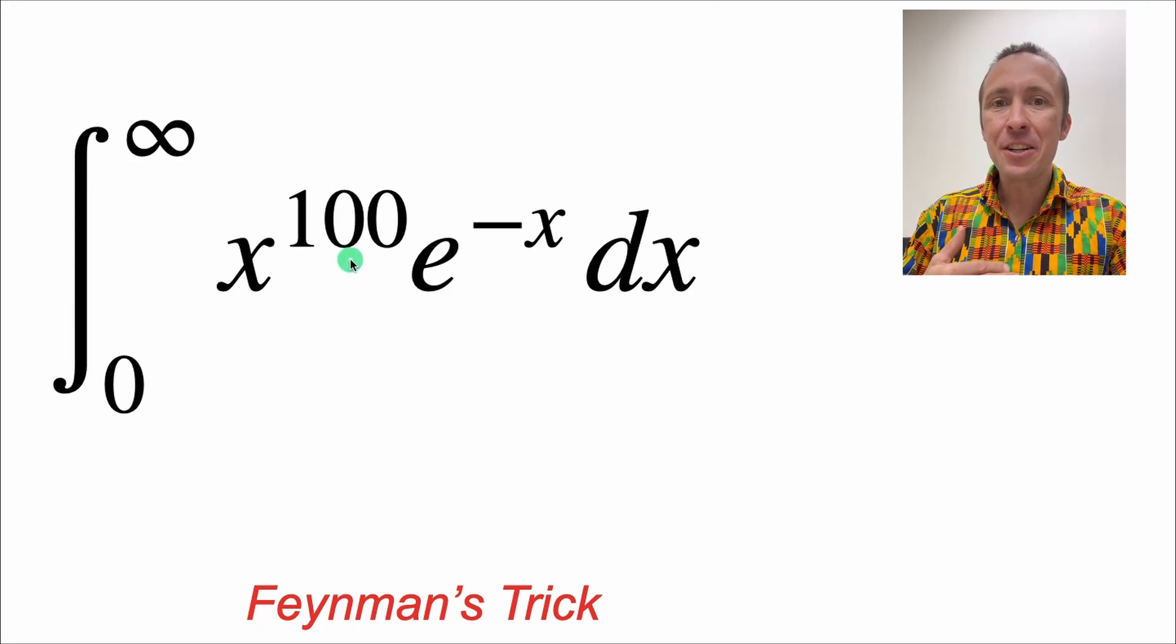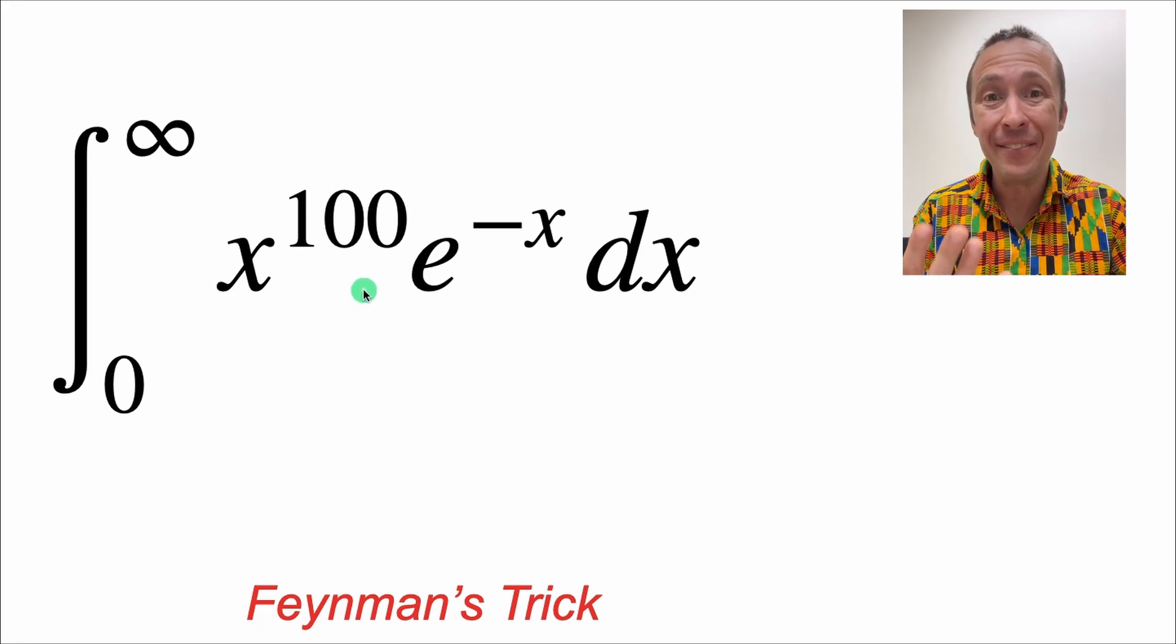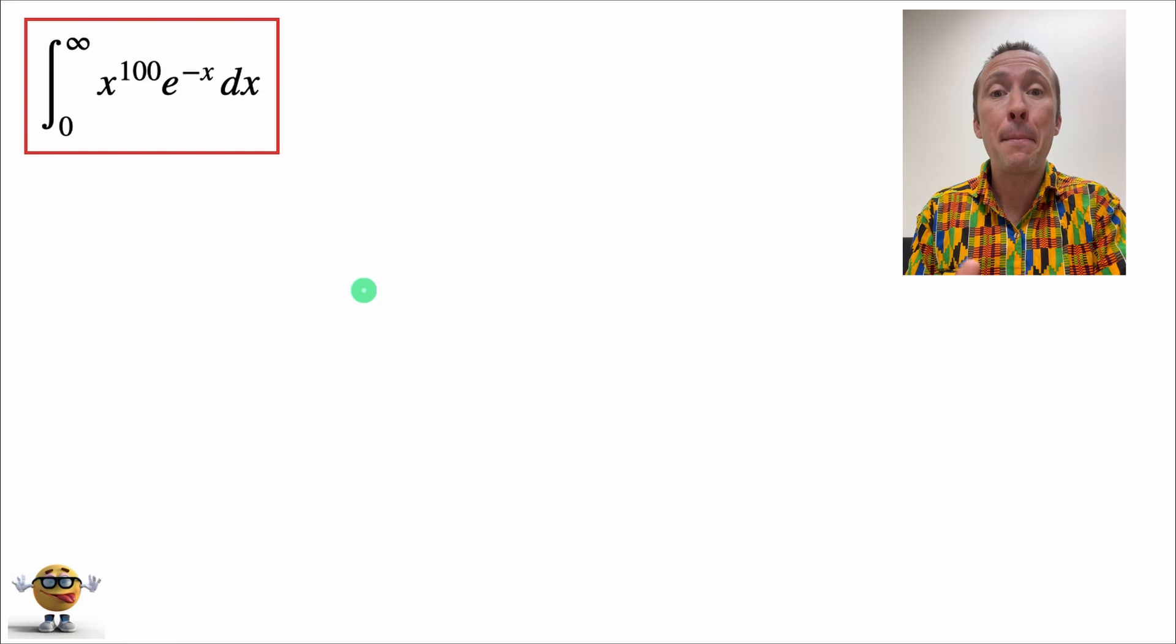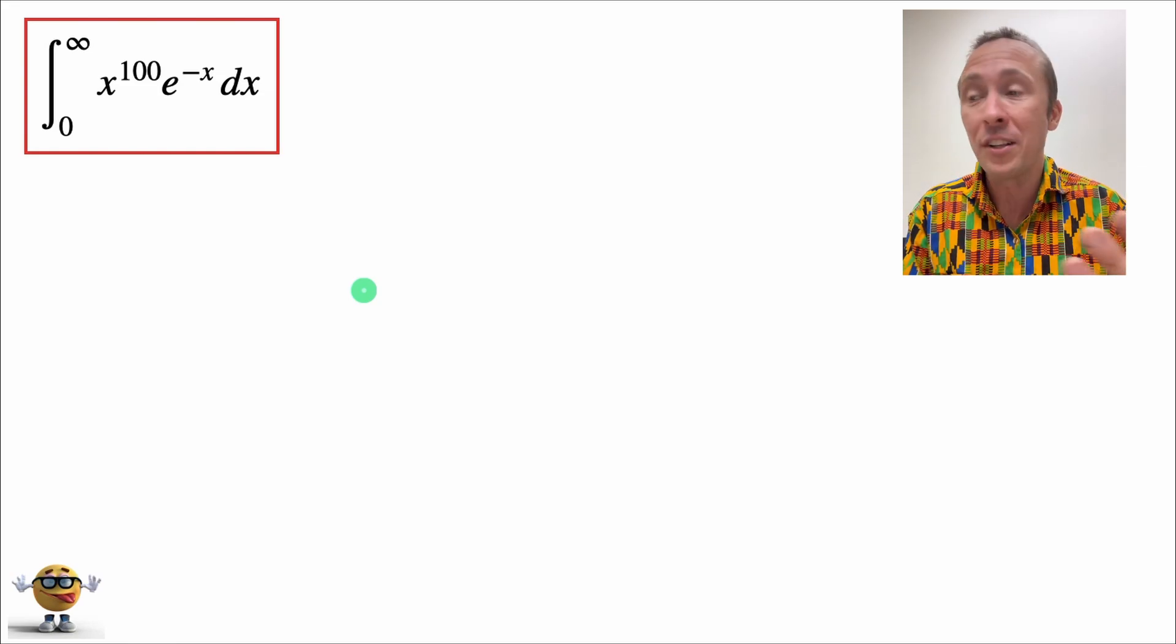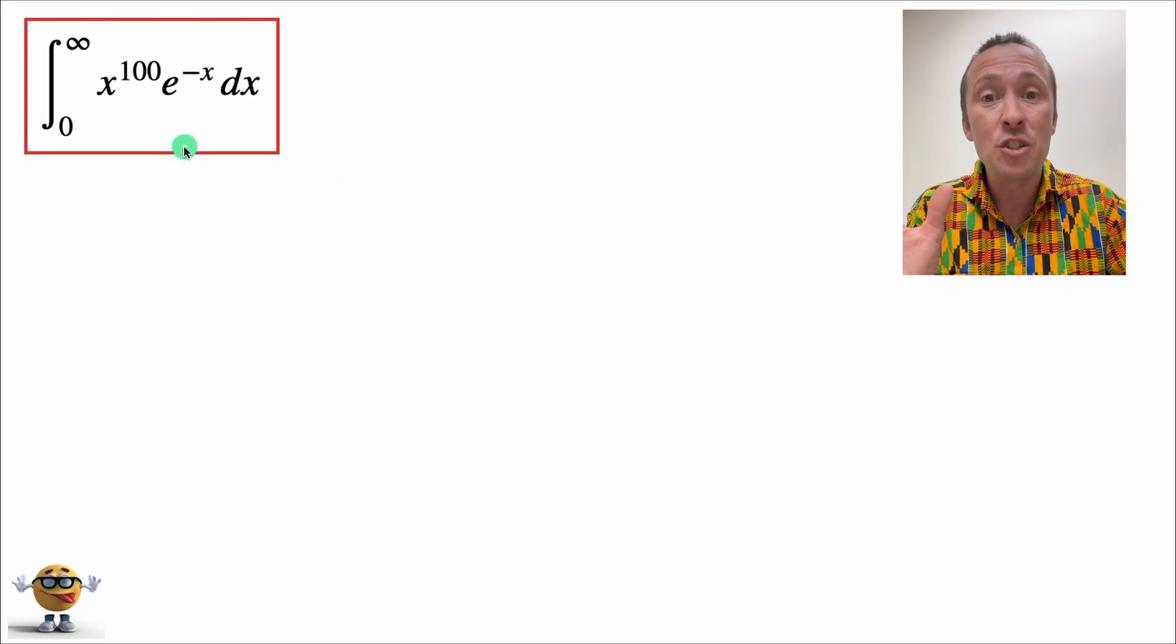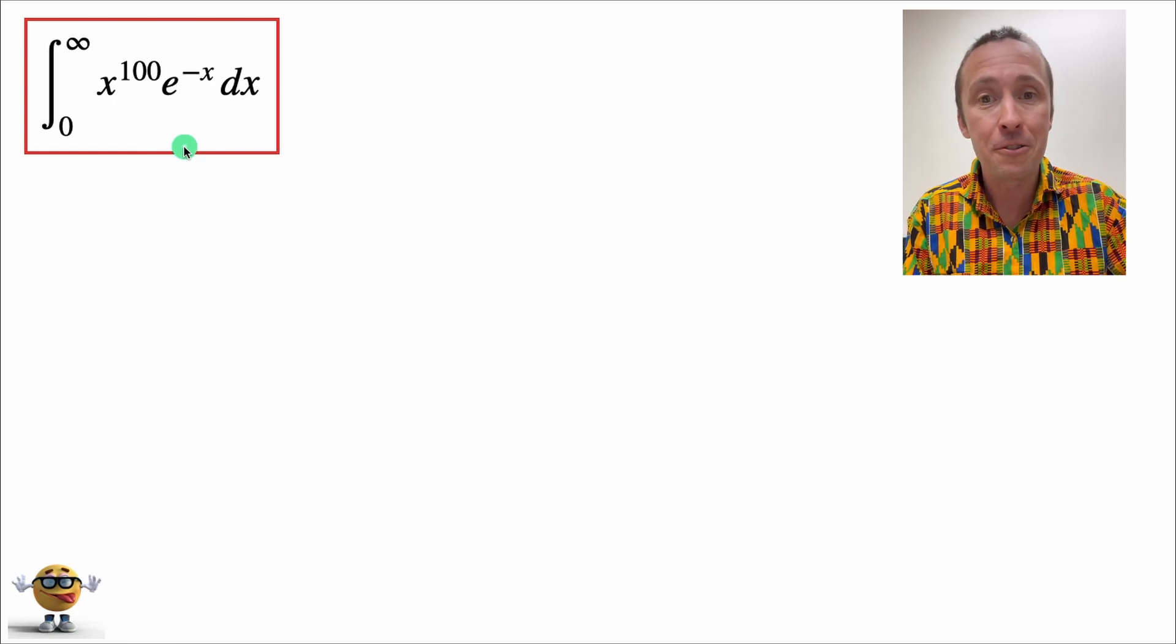What's up, my friends? We're going to evaluate the integral of x to the power of 100 times e to the negative x, and it's going to be awesome because we're not going to use integration by parts 100 times, although you can if you really want to. We're going to use the Feynman trick or Feynman technique, and you can use this technique to solve other integrals as well.